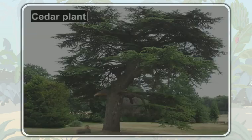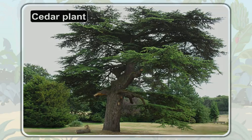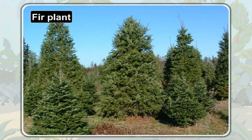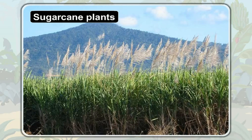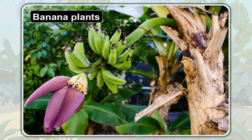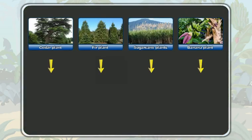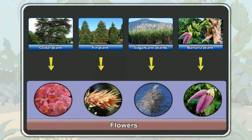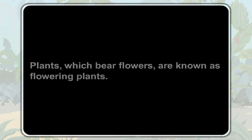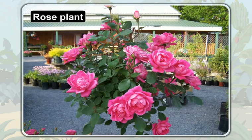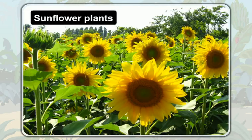A cedar plant, a fir plant, sugarcane plants, and banana plants also bear flowers. Plants which bear flowers are known as flowering plants. So, all these plants are flowering plants.